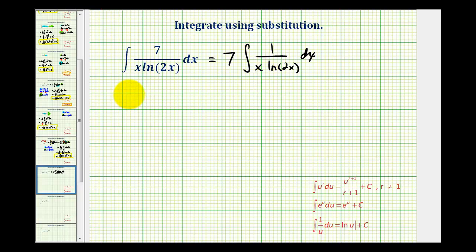If we let u equal the natural log function or natural log two x, then differential u would be u prime times dx. U prime is going to require the chain rule. It's going to be one over two x times the derivative of two x, which would be two times dx. So differential u is equal to one over x dx.